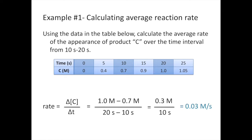When calculating the average reaction rate, you could calculate it over any time period. We could have calculated it from 5 seconds to 20 seconds and gotten a slightly different answer, or from 0 to 25 seconds for yet another value. Reaction rates change over time — as reactants are used up, reactions generally slow down. So when we calculate the average rate, we need to be specific about the time frame.